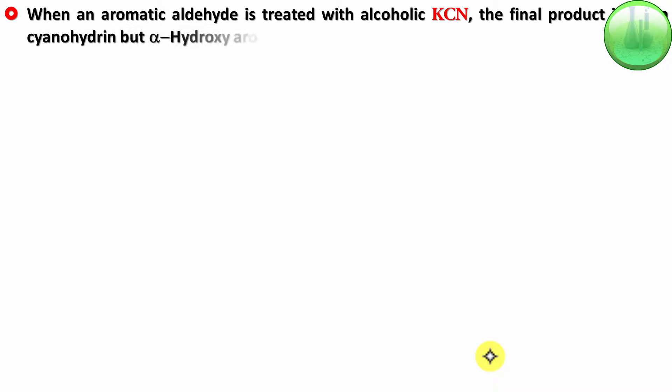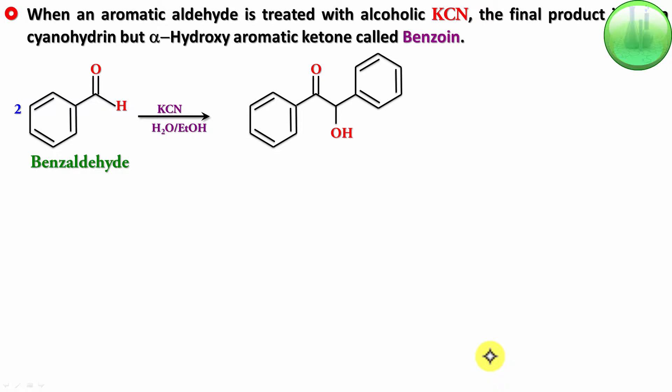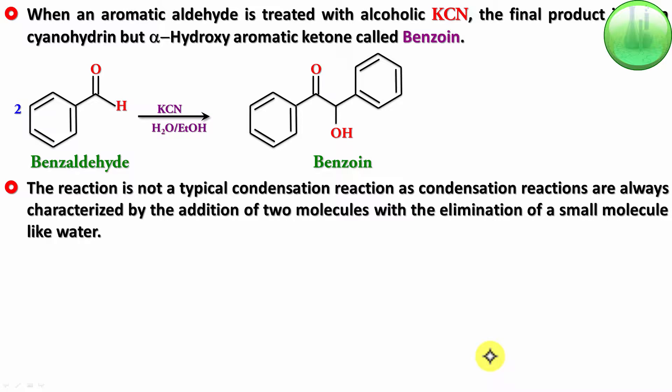When an aromatic aldehyde is treated with alcoholic KCN, the final product is not a cyanohydrin but an alpha hydroxy aromatic ketone called benzoin. Basically, two molecules of benzaldehyde combine in the presence of alcoholic KCN and give rise to benzoin. This should not strictly be called a condensation, because condensation reactions involve two molecules adding with removal of a small molecule like water. In this reaction nothing is removed — the two benzaldehydes simply add together, so it's more of an addition reaction.